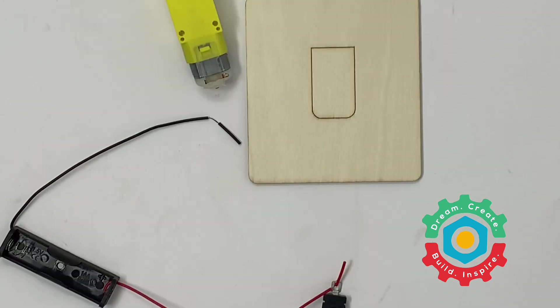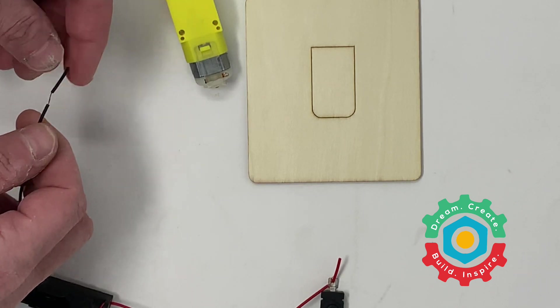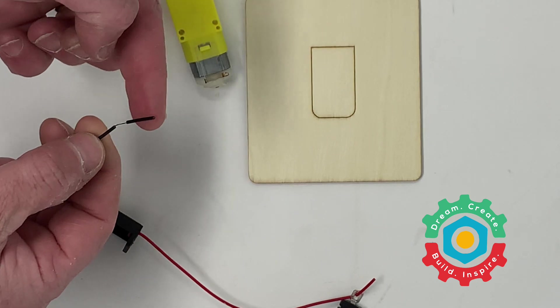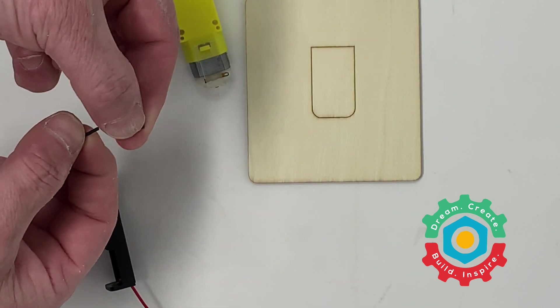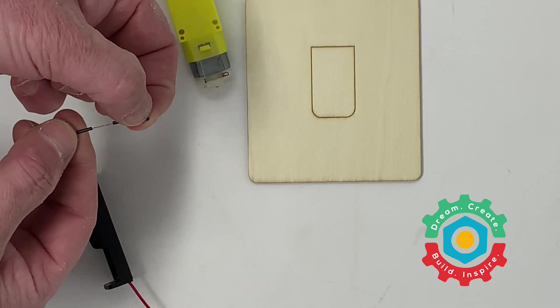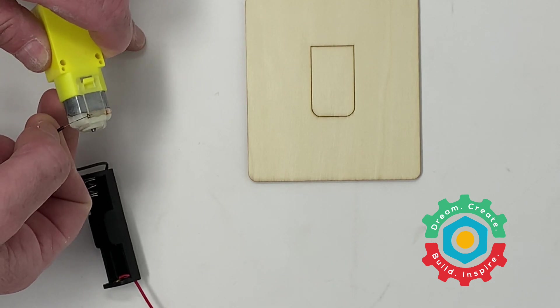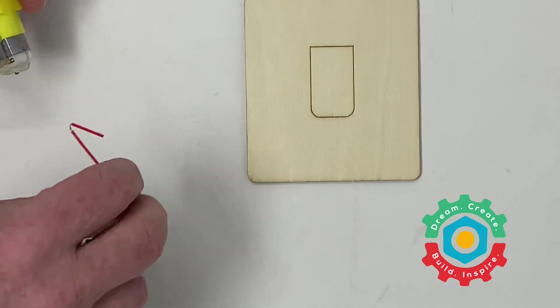Now we're going to wire in the motor. In this case we'll need to remove the tip of the lead. Just give it a little twist, that'll make sure that the end is nice and sharp. Pull it off and then we're just going to carefully insert it in here and we'll take our red lead.